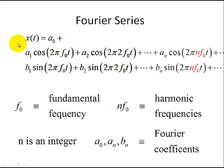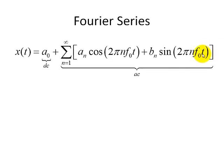Just like a vector is composed of other vectors, we have a function composed of other functions. Our function is a periodic function composed of other periodic functions — in this case, sines and cosines. So how much of the sines and cosines do we need to generate a periodic signal? Here's a more compact notation of representing our periodic signal x of t. We have a constant DC term which moves the signal up or down, and a whole bunch of sines and cosines with An and Bn defined as our Fourier coefficients. I call this the AC part.